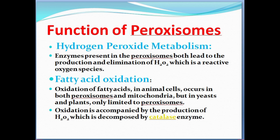Second function: Fatty acid oxidation. Oxidation of fatty acids in animal cells can occur in both peroxisomes and mitochondria. But in yeast and plant cells, fatty acid oxidation is limited to peroxisomes. This oxidation is accompanied by the production of H₂O₂, which is then decomposed by the catalase enzyme.